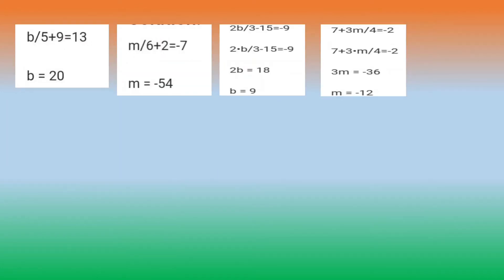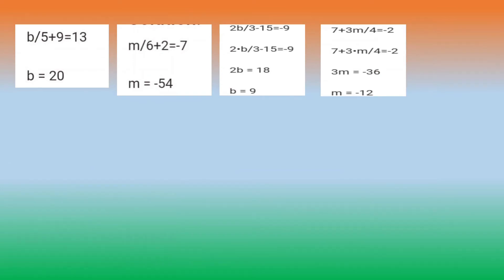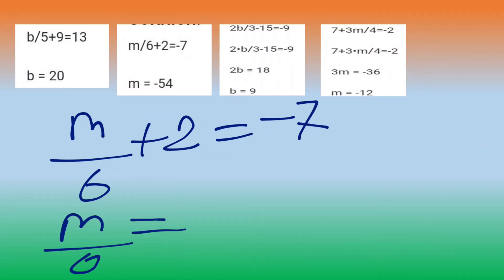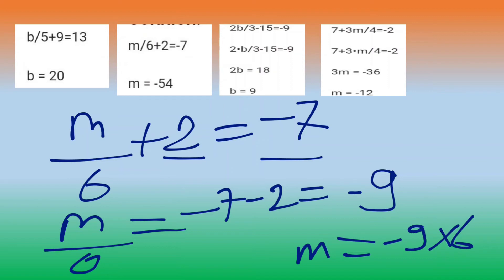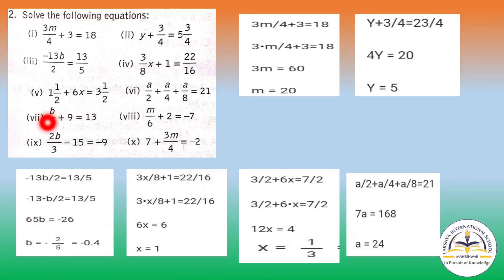We will solve question number 8: m by 6 plus 2 equals to 7. So m by 6 equals to 7 minus 2, which means you will get minus 9. Wait — m equals to minus 9 into 6, which means m equals to minus 54 is the answer.